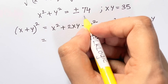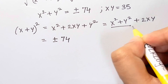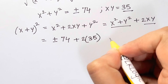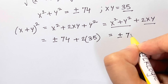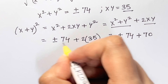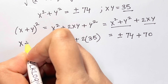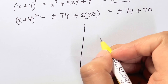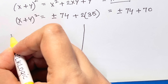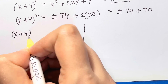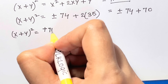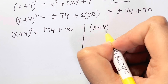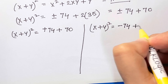Substituting, x² + y² = ±74 and 2xy = 2×35 = 70. So (x+y)² = ±74 + 70. This gives two solutions: (x+y)² = 74 + 70 = 144, or (x+y)² = -74 + 70 = -4.